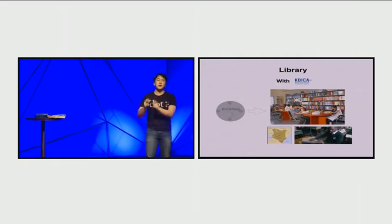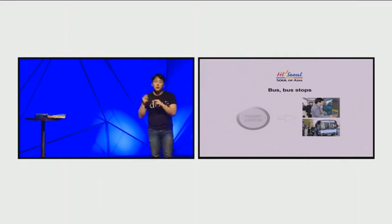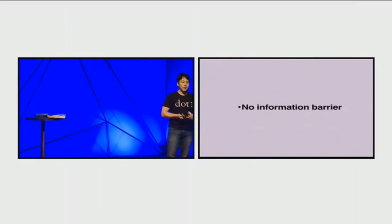Also, we are going to the library in Kenya so they can access all the public books. In Seoul, Korea, we are putting this device on bus stops so blind people can know the number of the bus, what bus is coming, and even the subway. What we want to do is make no information barrier for the 285 million visually impaired people all over the world.